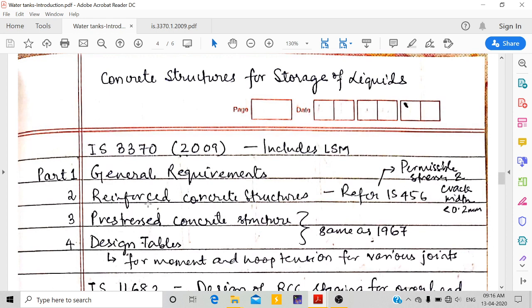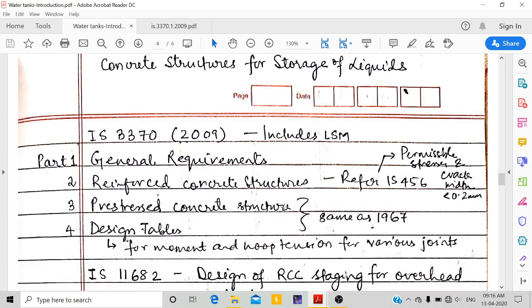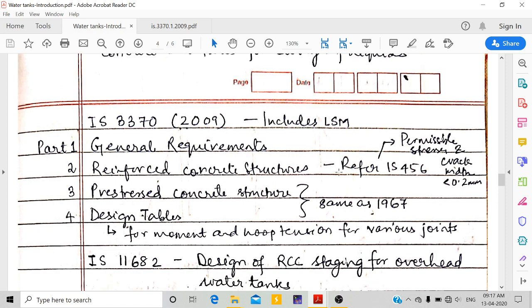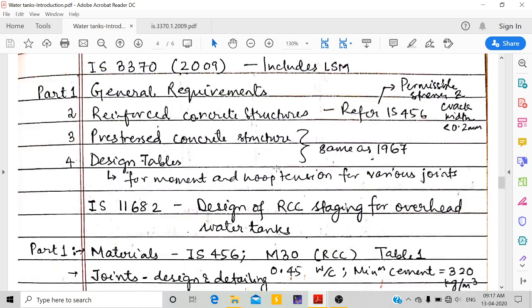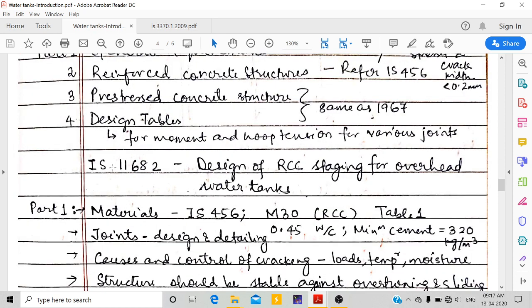Part 1 has general requirements. Part 2 is for reinforced concrete structures - mostly they have referred IS 456 for permissible stress, crack width, materials. Third is prestressed concrete structure, and fourth is design tables with many coefficients. We have another code, IS 11682, which gives design of RCC staging for overhead water tanks.